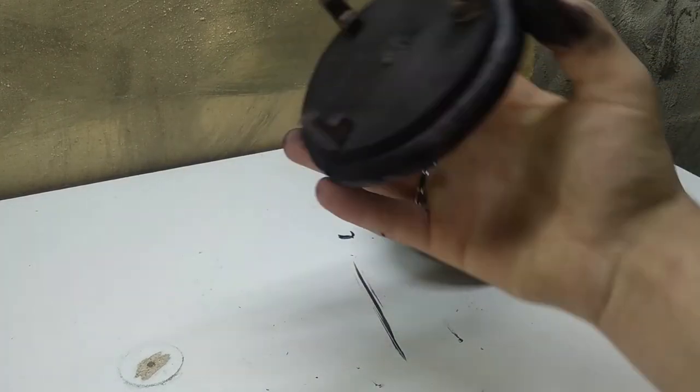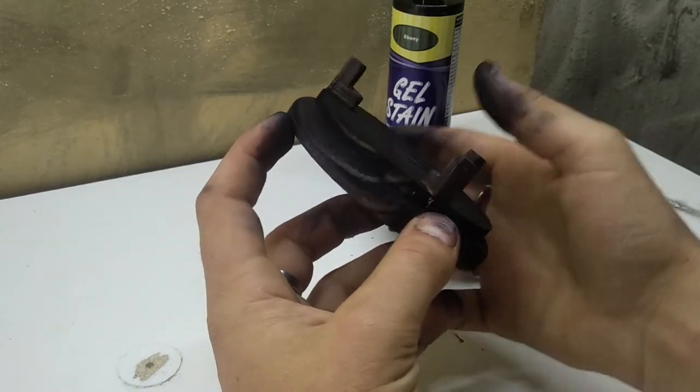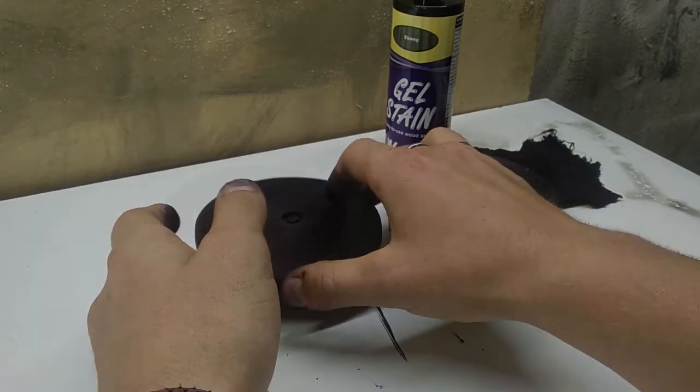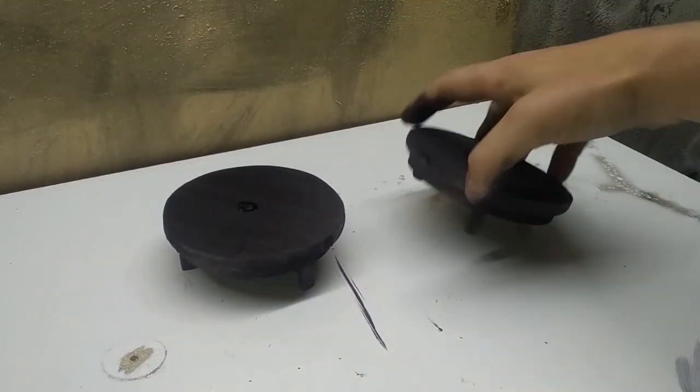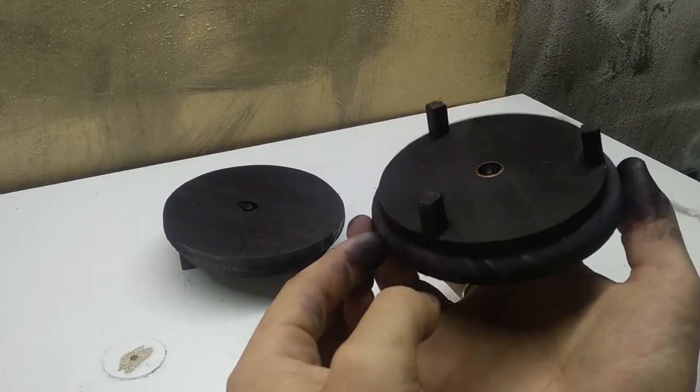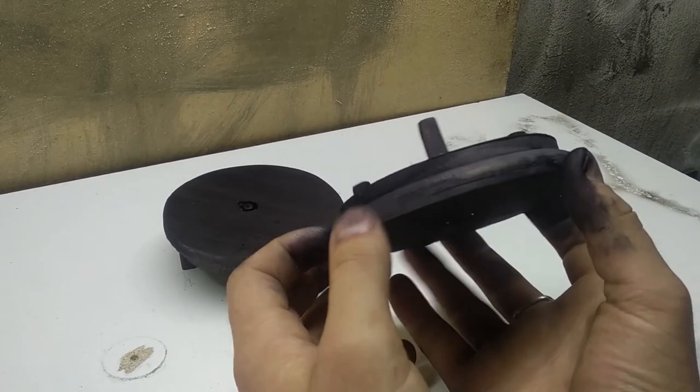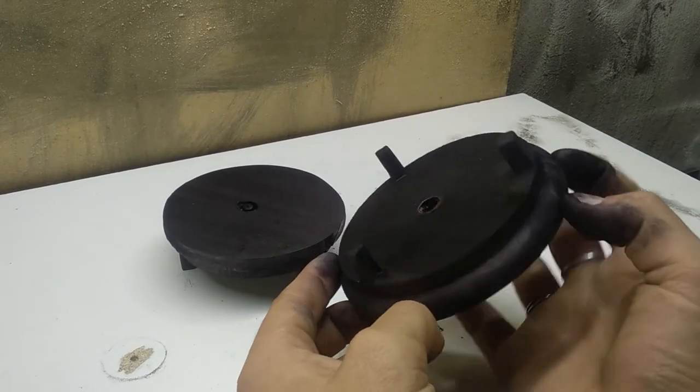We left those to dry and the nice thing with this gel stain is it doesn't take long at all to dry. Probably about 15 to 20 minutes and you can apply the next coat.